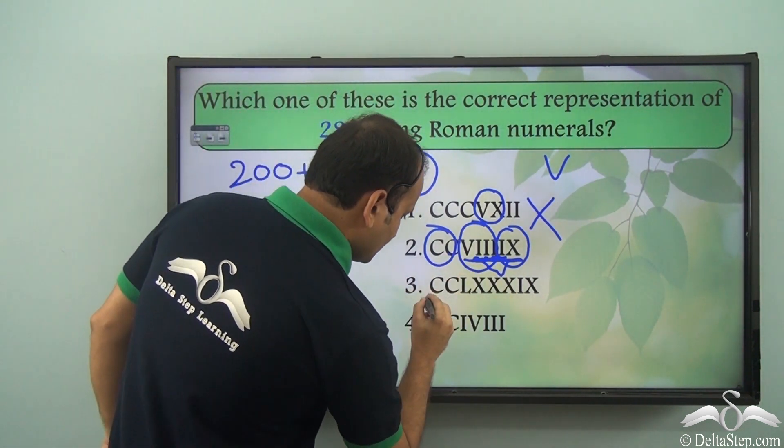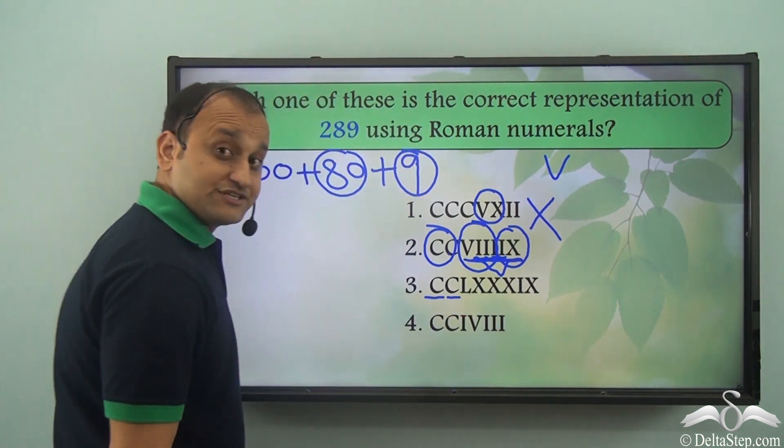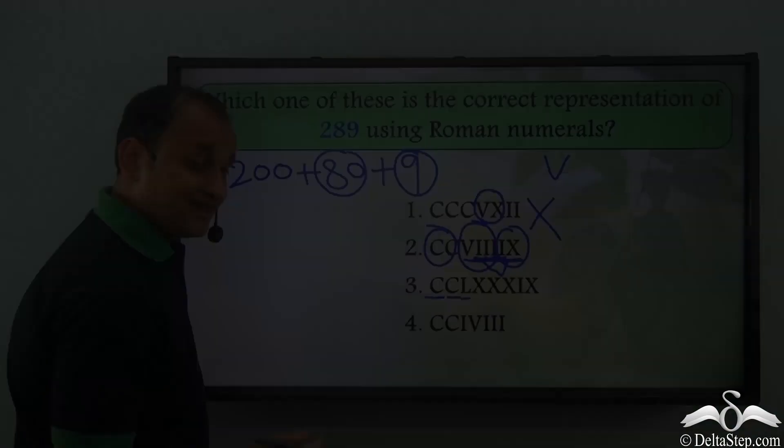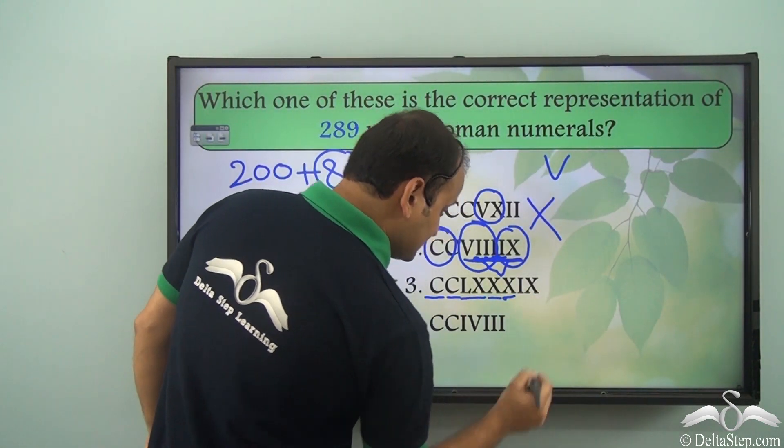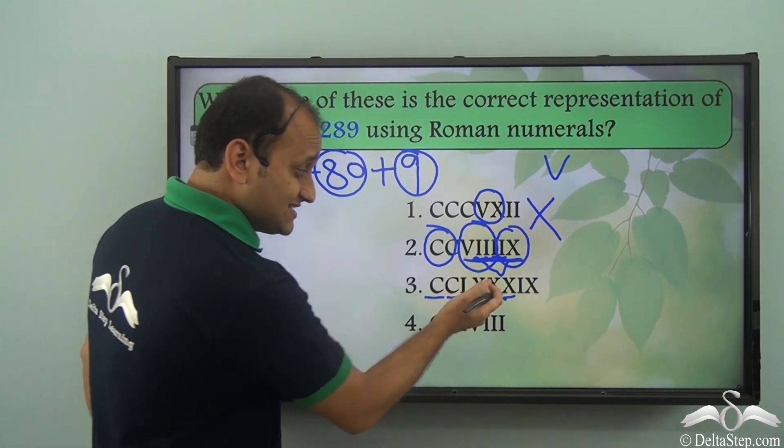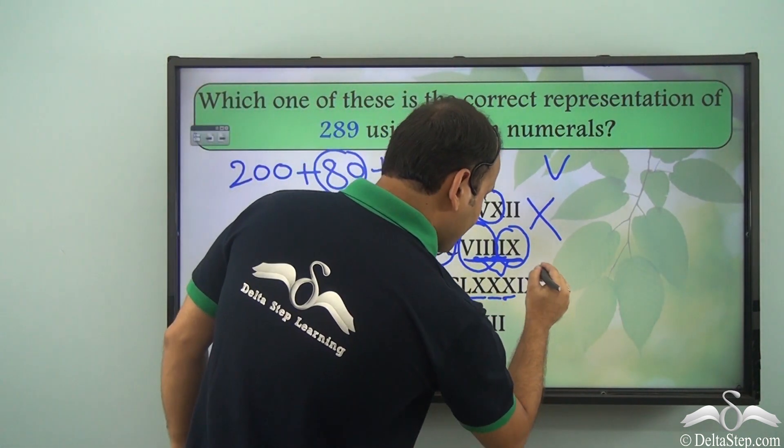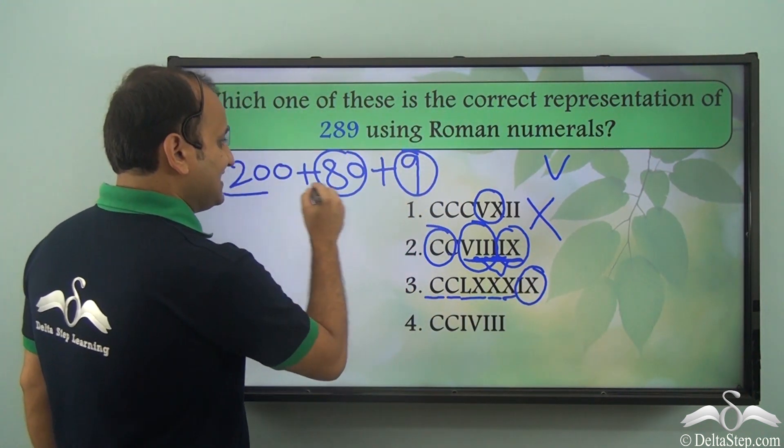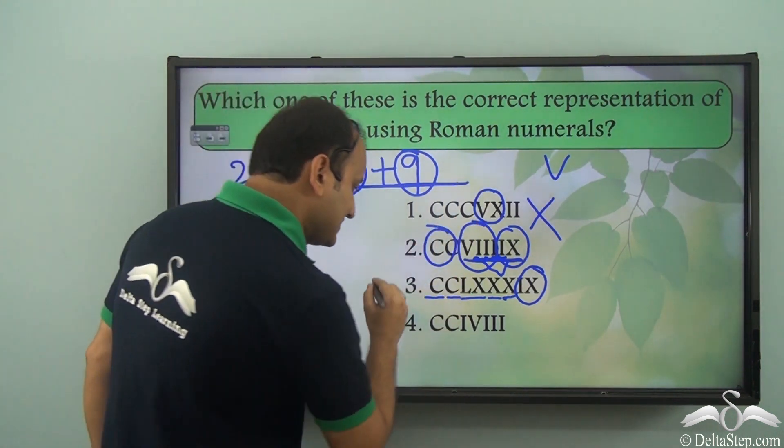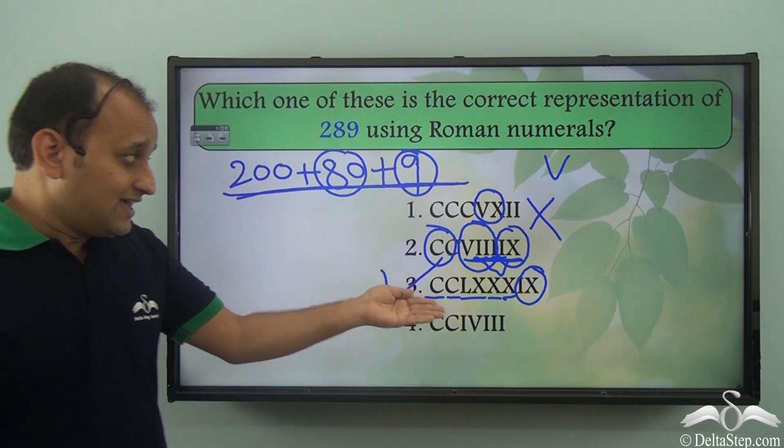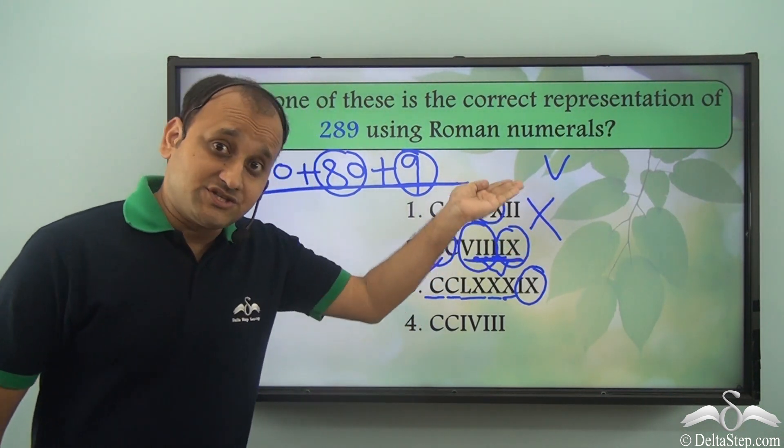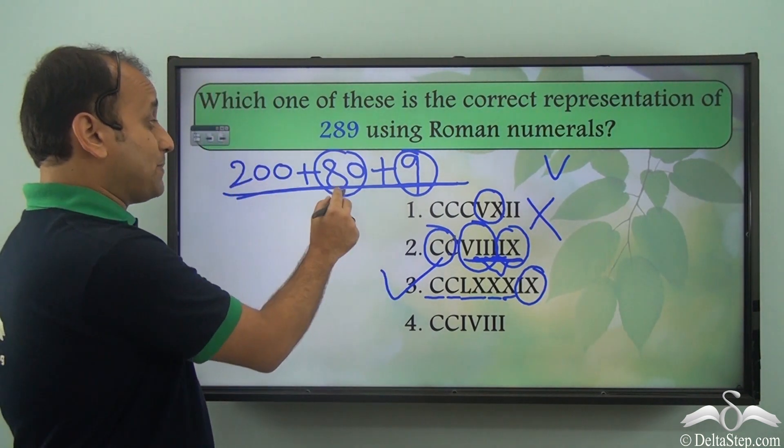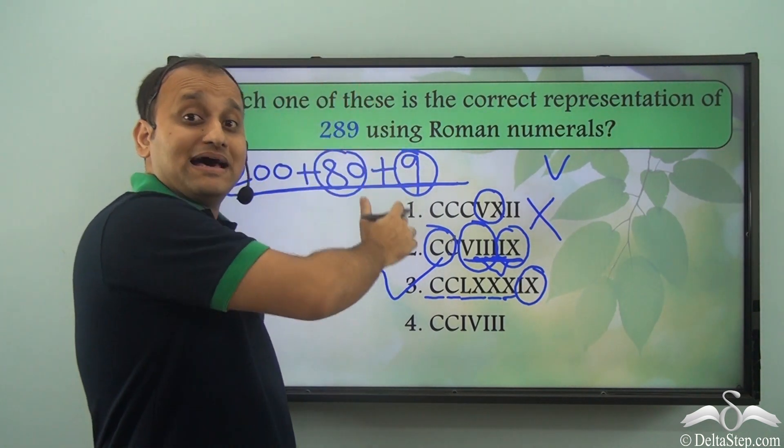Then let's come to this. We have 100 and 100, which is 200. Then we have L which is 50. Then we have X 3 times which is 30. 50 and 30 which is 80. And then we have a 9. So we have 289. Exactly this particular form. So this is the right answer. So you see there can be different ways in which you can represent it. But only one is correct where you break it properly. That is 200 plus 80 plus 9.